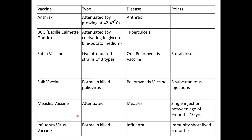Here is a summary table of important vaccinations. Anthrax is an attenuated vaccine — the strain is attenuated by growing it at 42 to 43 degrees Celsius, effective against anthrax disease. BCG is attenuated by growing on glycerol and bile potato medium, or in high bile concentration, and is effective against tuberculosis. The Sabin vaccine is the live attenuated oral polio vaccine given in three doses.